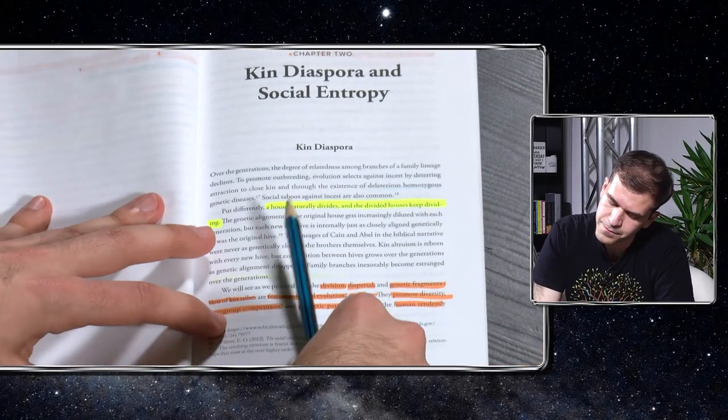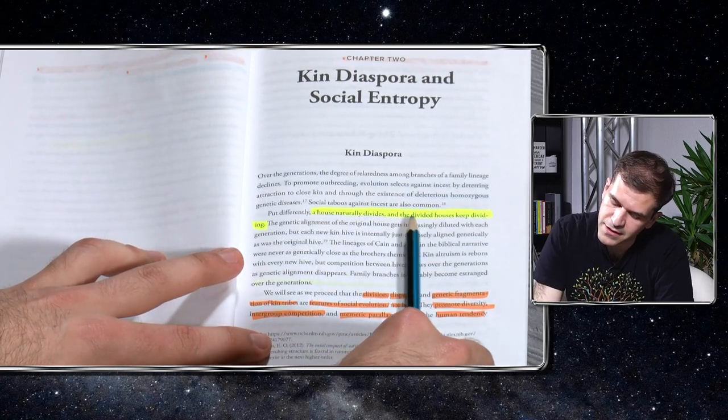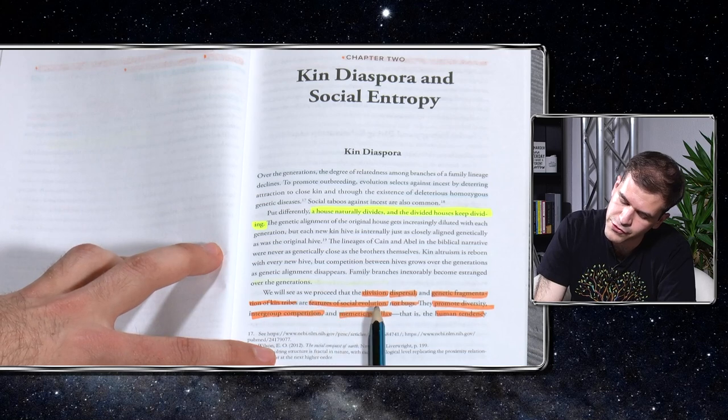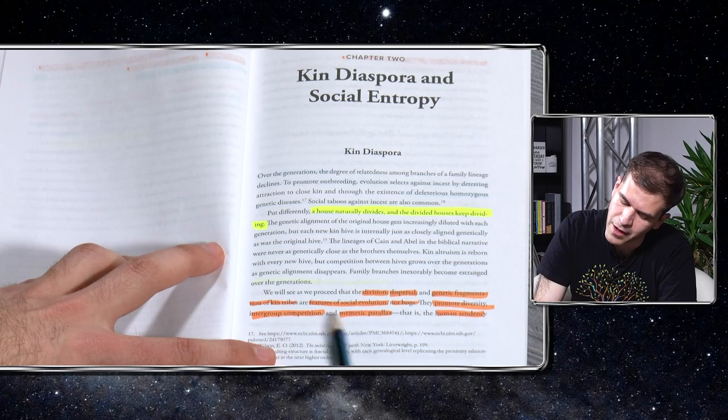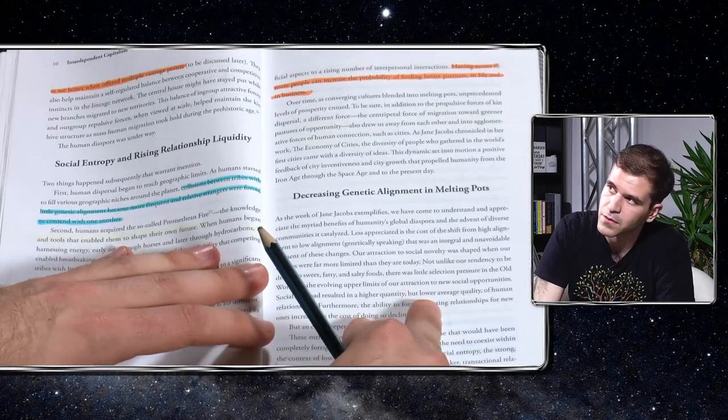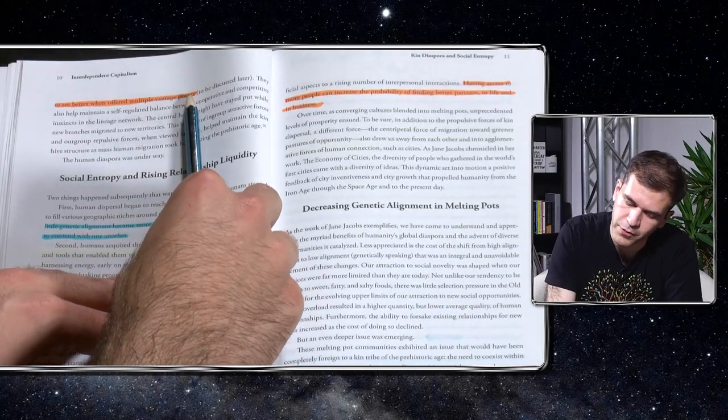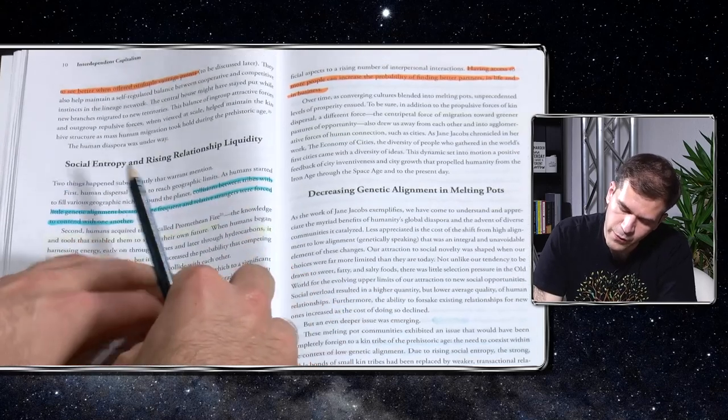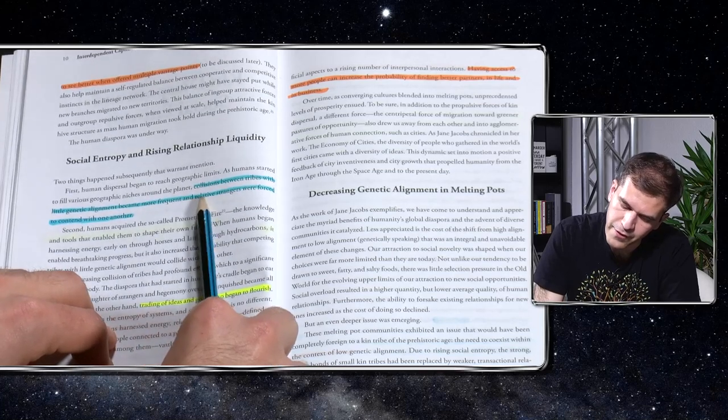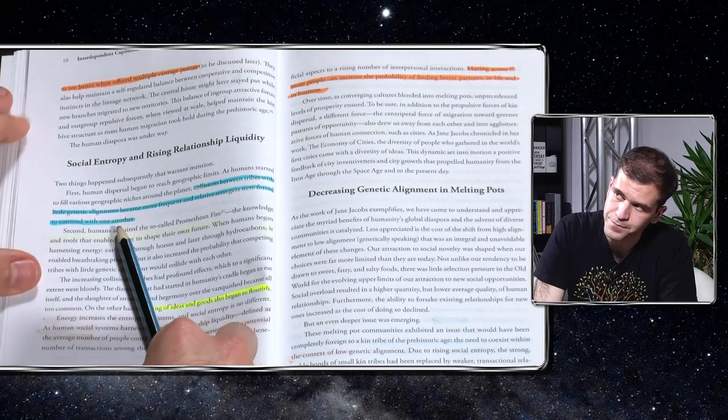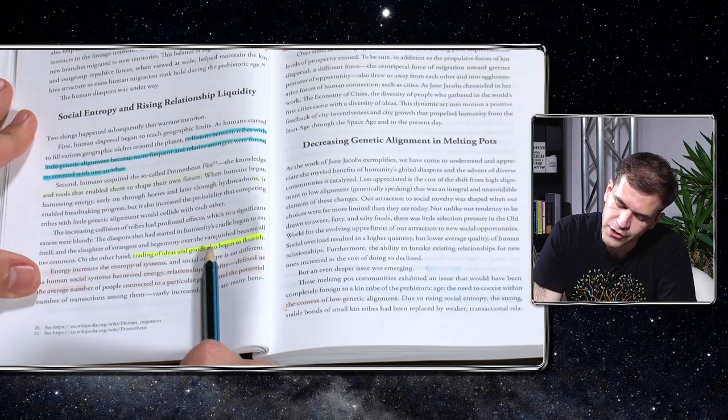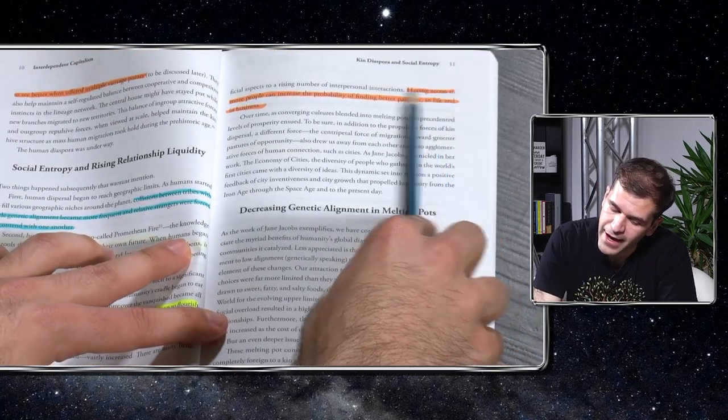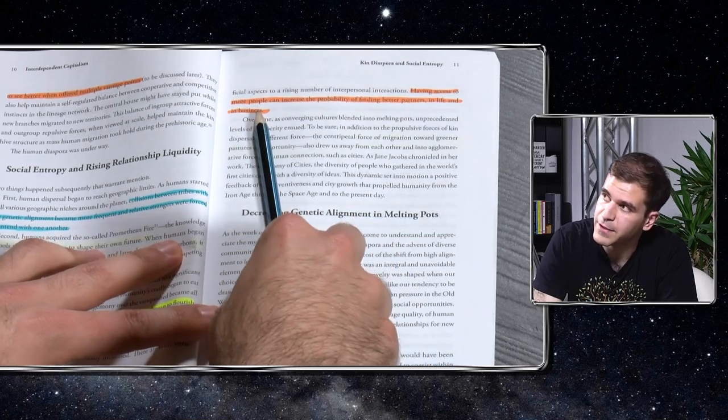Kin diaspora and social entropy. A house naturally divides, and the divided houses keep dividing. The division, dispersal, and genetic fragmentation of kin tribes are features of social evolution, not bugs. They promote diversity, intergroup competition, and mimetic parallax. That is, the human tendency to see better when offered multiple vantage points. And we're going to get to mimetic parallax later in the importance of that. Collisions between tribes, with little genetic alignment, became more frequent, and relative strangers were forced to contend with one another. On the other hand, trading of ideas and goods also began to flourish. This is with social entropy. Having access to more people can increase the probability of finding better partners in life and in business.